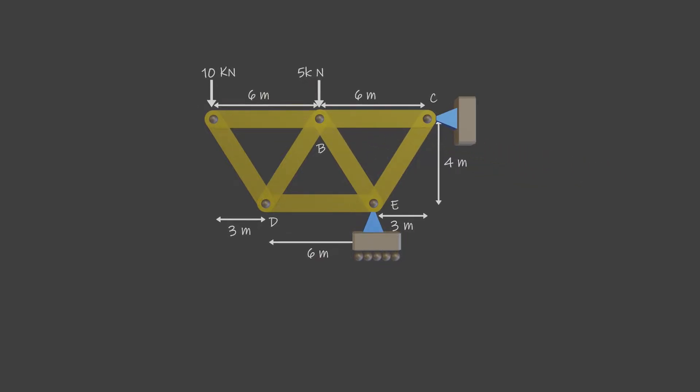For analyzing a truss using the method of joints, always choose a joint having at most two unknowns and at least one known force.